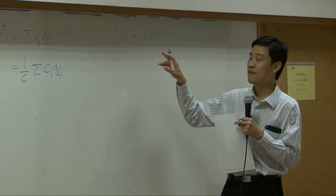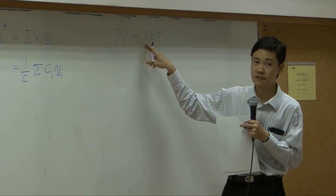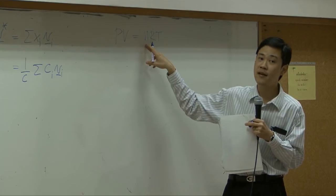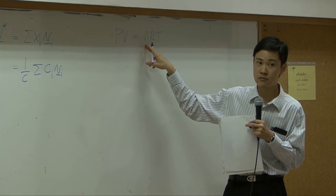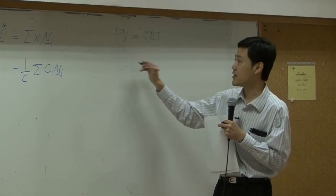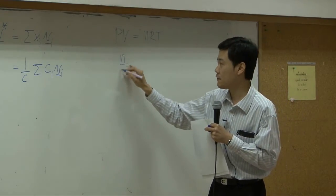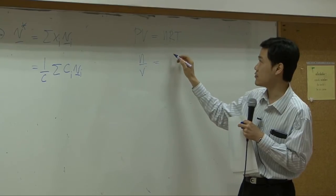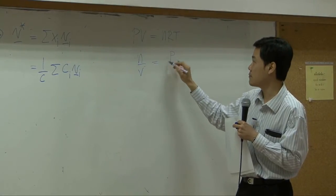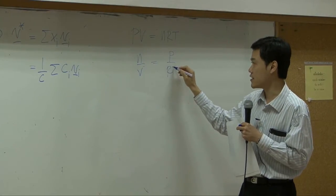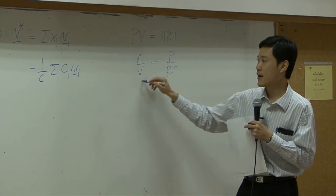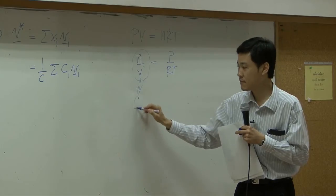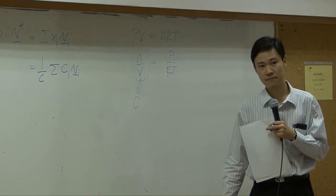What is N? Number of moles. So if you take N over V, which is equal to P over RT, N over V is C.